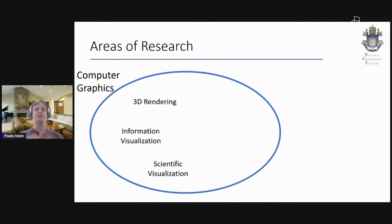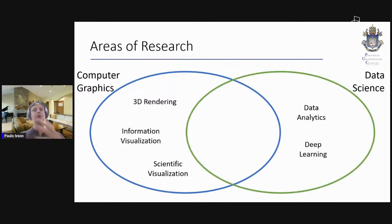Two other areas are information visualization — how to transform information into something that can be presented visually for better understanding — and scientific visualization, where information is associated with a physical domain, such as an area, volume, or physical object, and you want to present that information visually. For example, a beam simulation of stresses that you want to visualize on the 3D object.